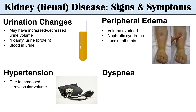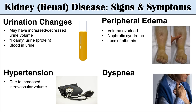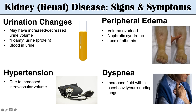Another symptom we can see with kidney disease is dyspnea, or shortness of breath. This is often again due to volume overload, which can lead to peripheral edema and hypertension, and even increased fluid within the chest cavity — surrounding the lungs and causing issues with breathing. We can also see some chest pain in these individuals.